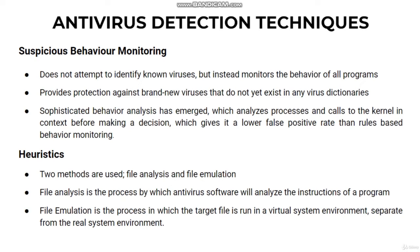The last detection method is heuristics. Some of the more sophisticated antivirus software uses a heuristic-based approach to identify new malwares, using two methods: file analysis and file emulation. File analysis is the process by which antivirus software analyzes the instructions of a program and determines whether or not the program is malicious. For example, if the file contains instructions to delete important system files, the file might be flagged as a virus. While this method is useful for identifying new viruses and variants, it can trigger many false alarms.